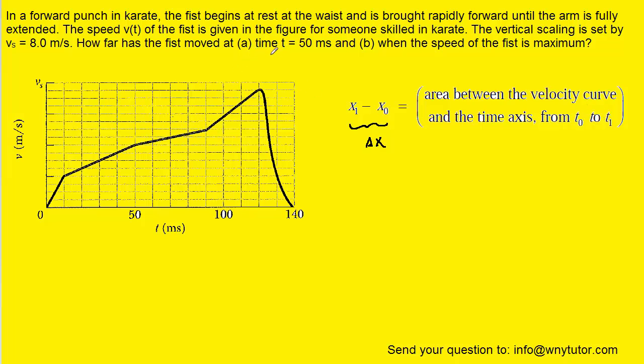So in part A, when they ask for the displacement at a time of 50 milliseconds, what we want to do is come over to 50 milliseconds and draw a line to partition the graph. Essentially what we need to do is find the area of this shape right here. Once we do that, that's going to give us the displacement of this fist.